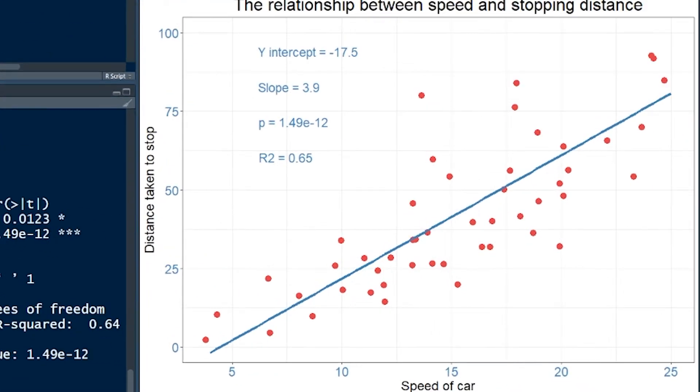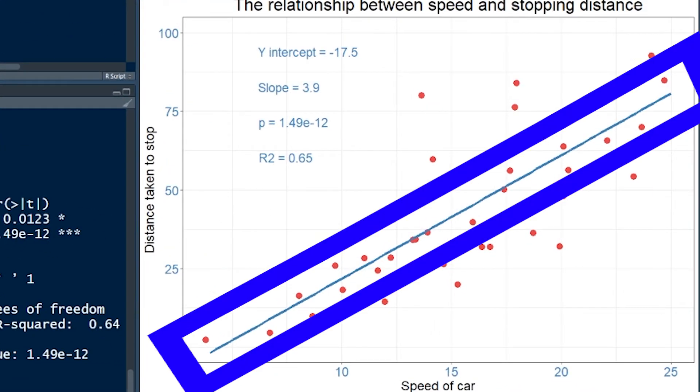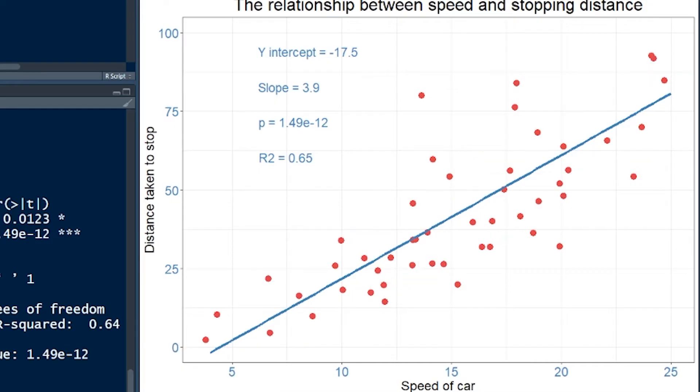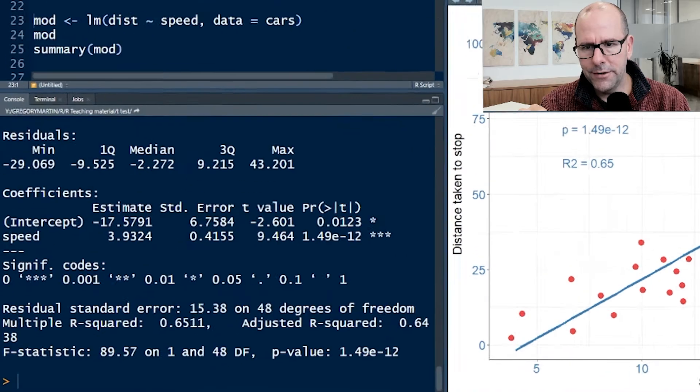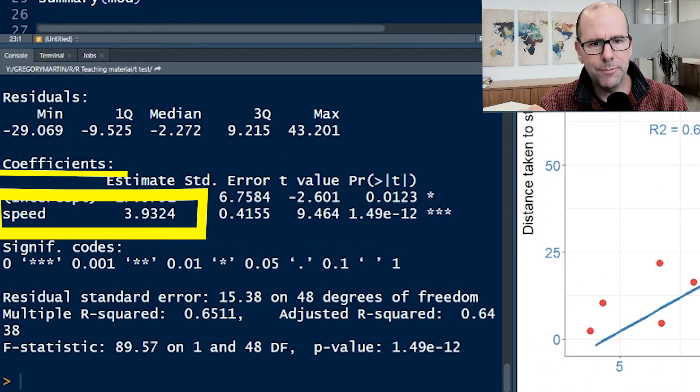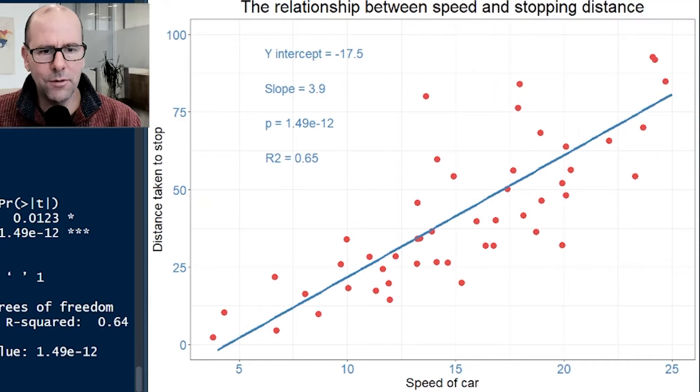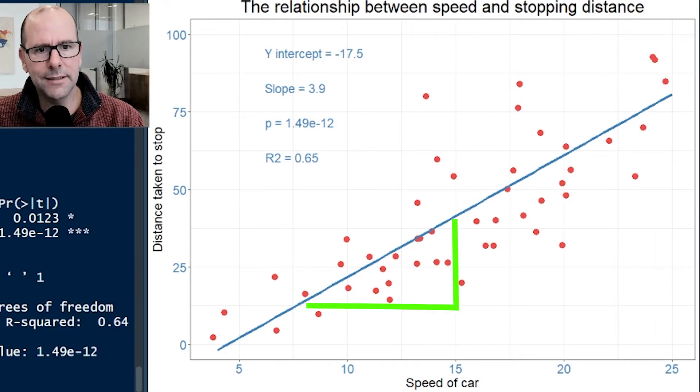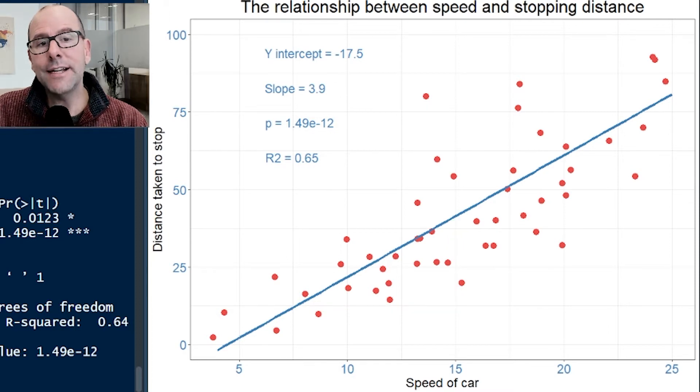The first is what is the slope of this line? The model gives us the slope here, one of the coefficients next to speed: 3.9. What does that mean? For every movement of one unit on the x-axis, there's a movement of 3.9 units on the y-axis. So for every increase in speed of one mile per hour, there's an increase of 3.9 feet required to stop the car.